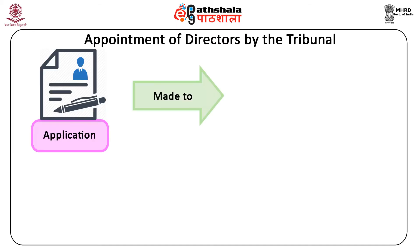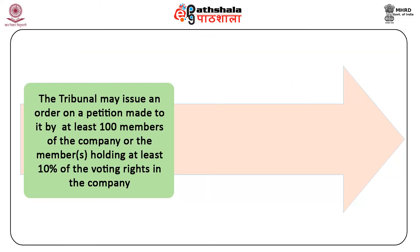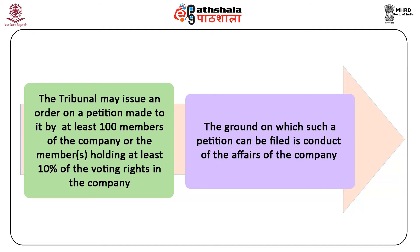Appointment of directors by the tribunal: where an application is made to the tribunal under Section 241 for relief against oppression and mismanagement of a company's affairs, the tribunal may, if satisfied, order for the appointment of such number of persons as directors as may be required to report to the tribunal on such matters as the tribunal may direct. The tribunal may issue such an order on a petition made by at least 100 members of the company or the members holding at least 10% of the voting rights in the company. The grounds for such a petition include conduct of the affairs of the company in a manner oppressive to any member, or prejudicial to the interests of the company or public interest.